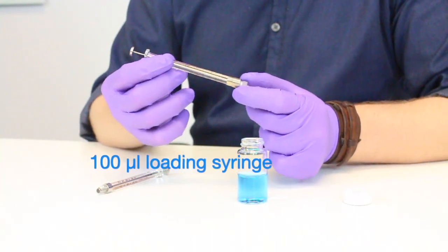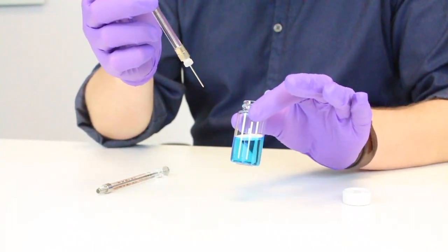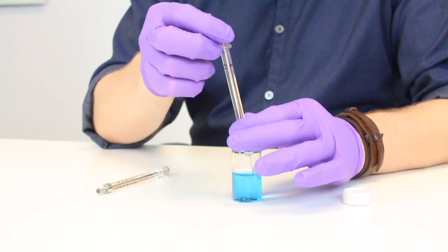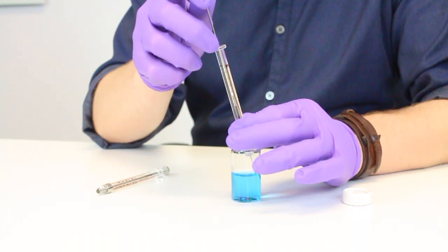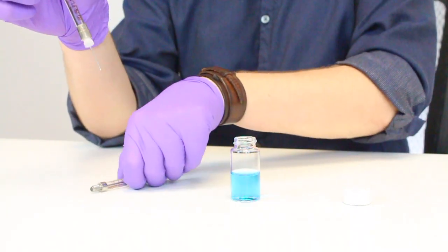So here I have a 100 microliter loading syringe and I have quite a bit of sample here but this even works if I have a tiny amount of sample. So I'm only going to draw up a little bit. Let's say I'm working with 50 microliters. So there I've drawn up 50 microliters.